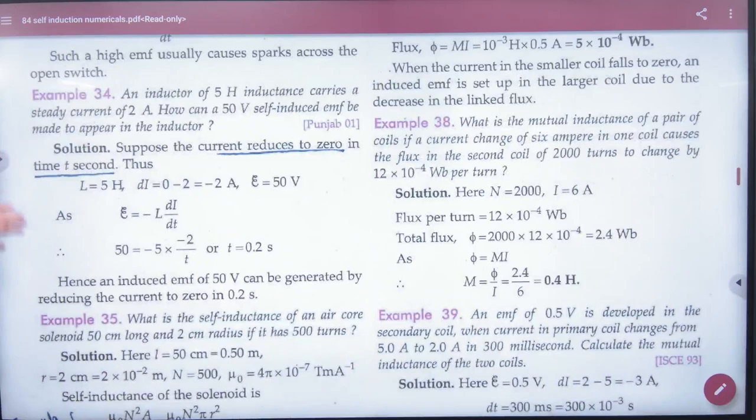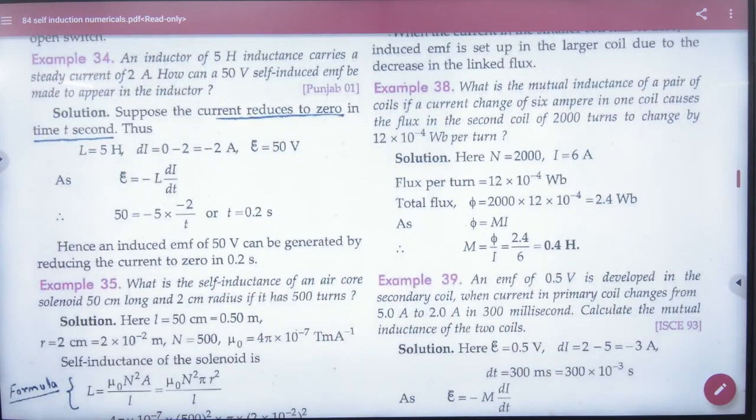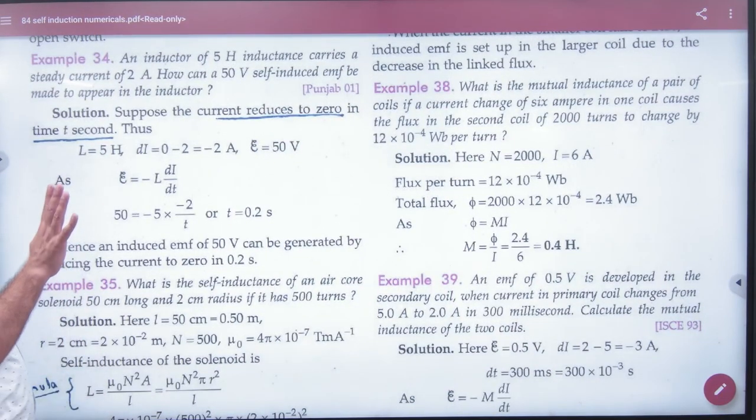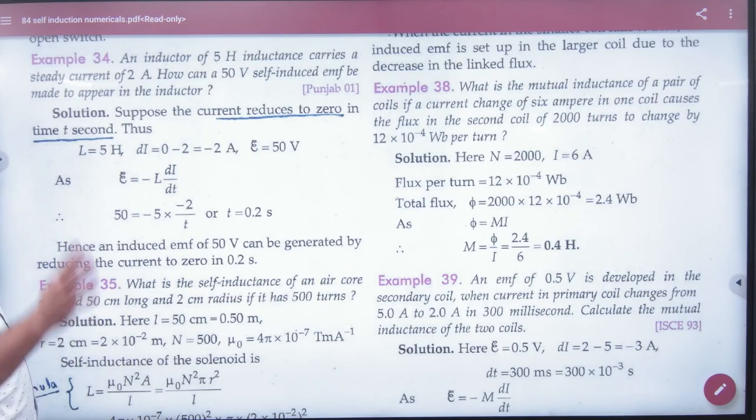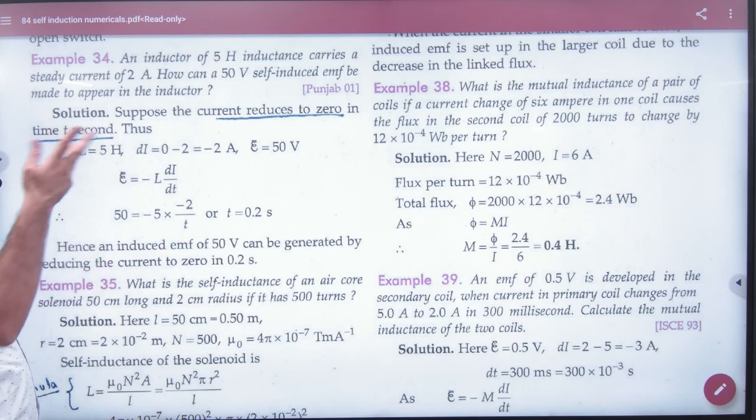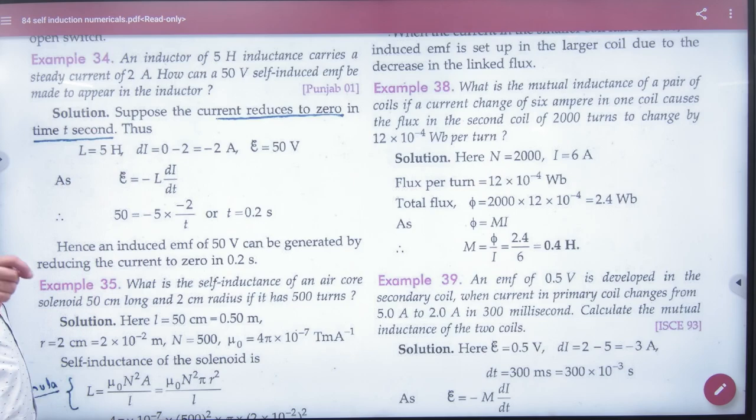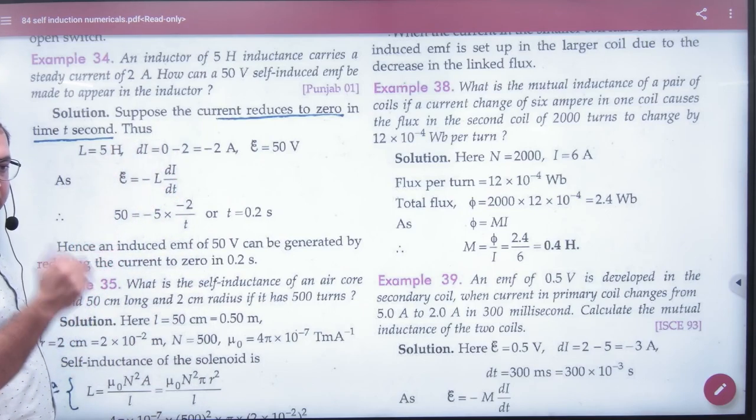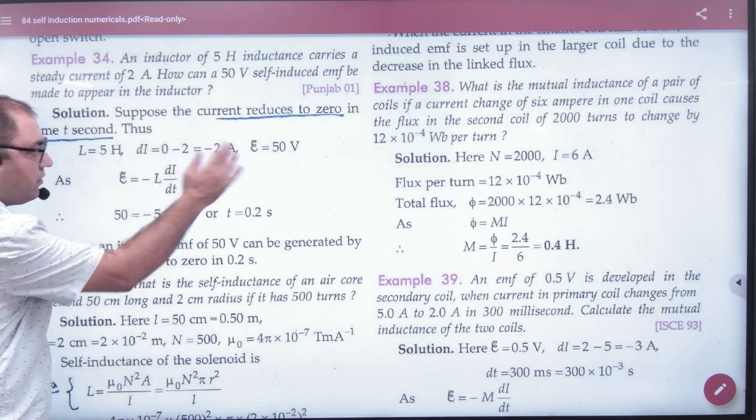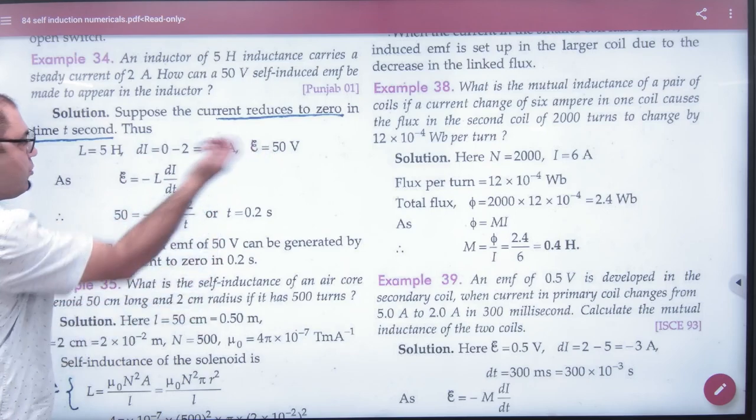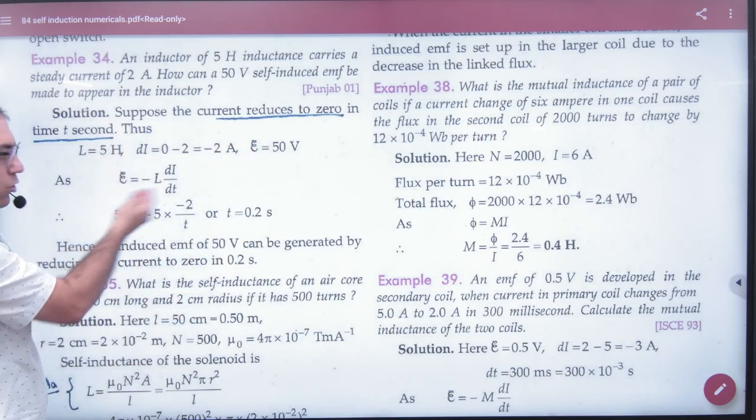Example 34: An inductor of 5 henry inductance carries a steady current of 2 ampere. Again current is constant. How can 50 volt self-induced EMF be made to appear in the conductor? If I want induced EMF of 50 volts to develop, do nothing except make current zero. Initially current is 2, now make it zero. So change in current is zero minus 2. EMF you want is 50. L you know. Put values: E known, L known, di known.